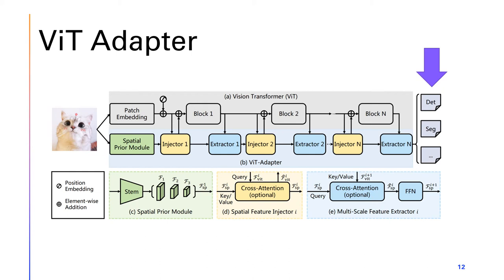The last step is to split up each level of features — one-eighth, one-sixteenth, and one-thirty-second — and upsample the one-eighth scale features with a 2x2 transpose convolution to create a one-fourth scale feature map. Using the four levels of feature maps, the model can be used for dense prediction tasks.